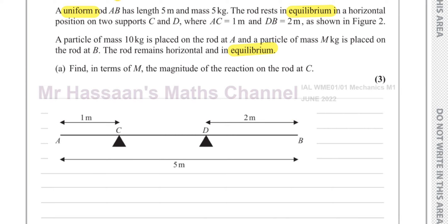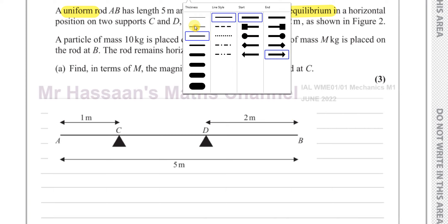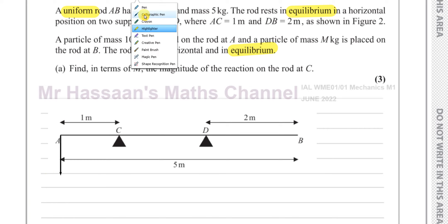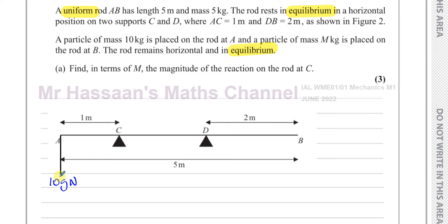I've got the diagram drawn here so we can see everything as we show our steps. We have a mass at A which is 10 kilograms, so that force is 10G Newtons. We also have a mass at B which is M kilograms, so that's MG Newtons. We know the rod is uniform, meaning the weight is evenly distributed along its length, so we can take the centre of mass as the geometric centre. Since it's 5 metres long, exactly 2.5 metres in from the ends is where we take the mass of the rod to act - it's 5 kilograms, so 5G Newtons acting right in the centre.